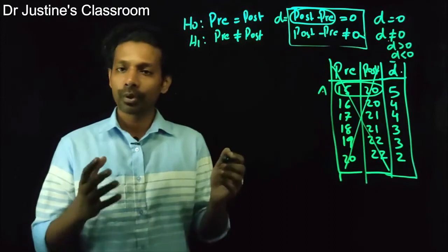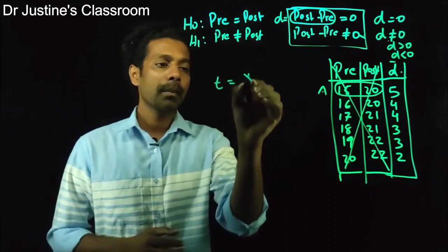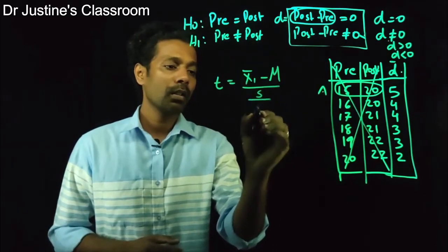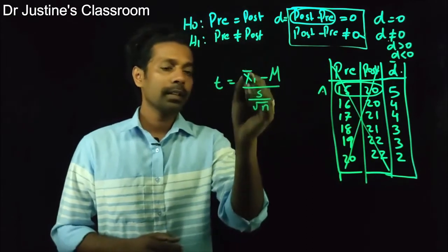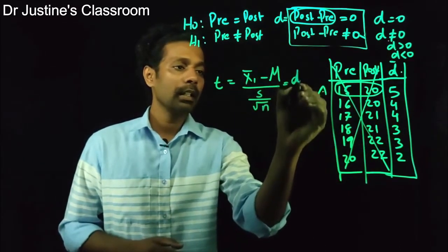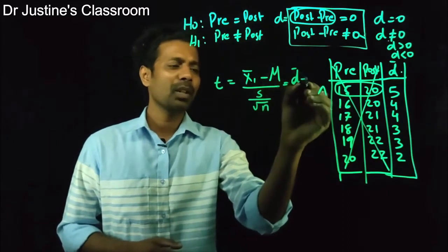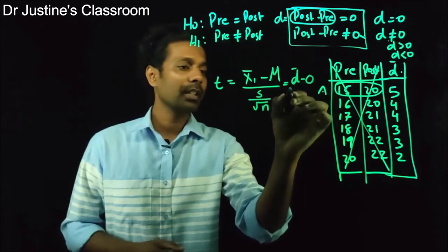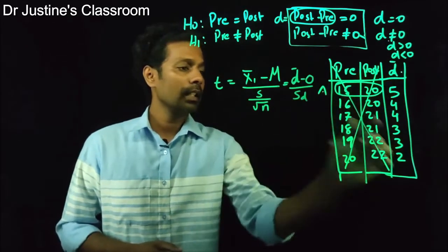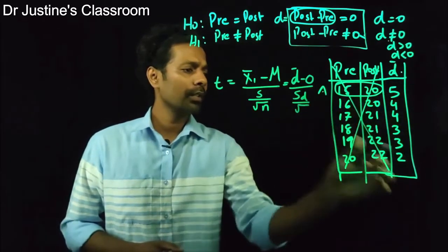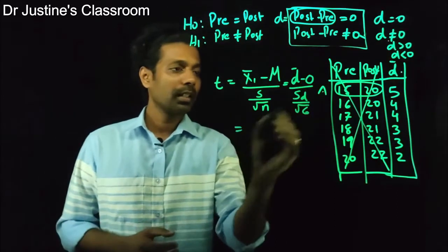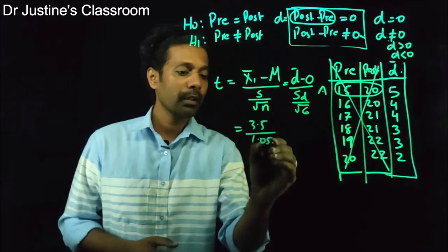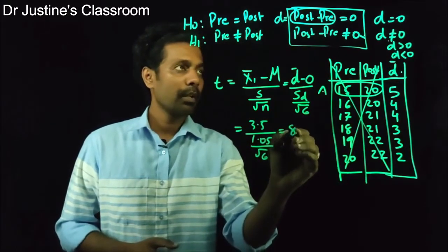Now let us go to the equation. The fundamental equation of a t-test is: sample mean minus population mean mu, divided by standard error, which is standard deviation of the sample divided by root n. In this context the sample mean is D-bar, and the population mean is 0 — we are checking whether D is significantly different from 0. So the formula becomes D-bar divided by the standard deviation of D over root n. We have six observations, so root 6. The mean of D is 3.5, and the standard deviation of D is 1.05. So 3.5 divided by 1.05 over root 6 gives a t value of 8.17.